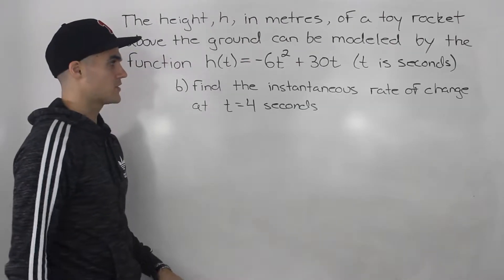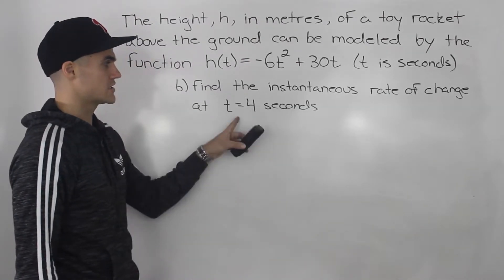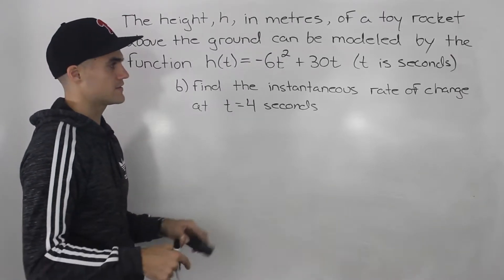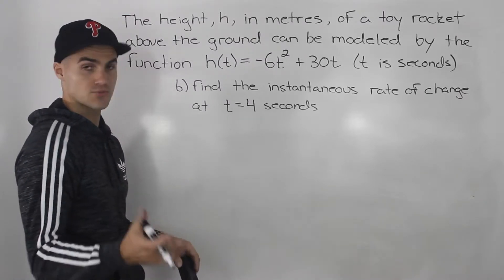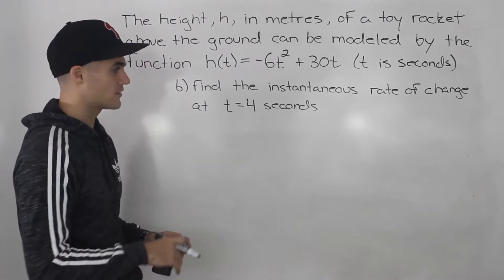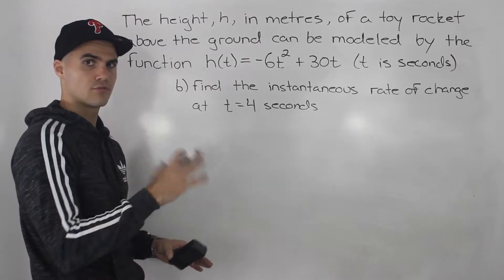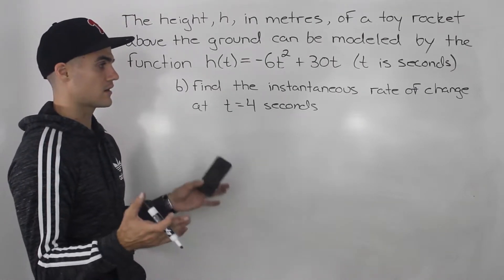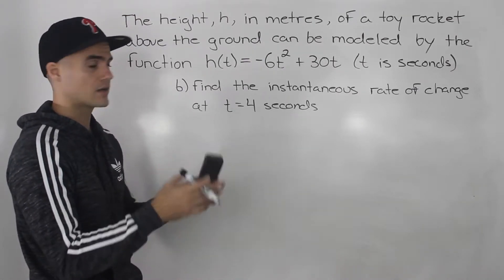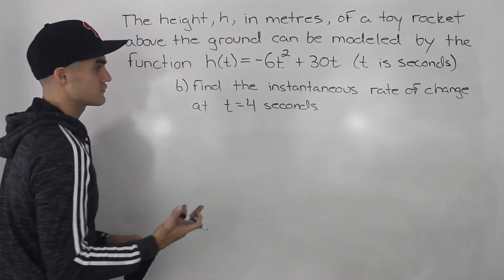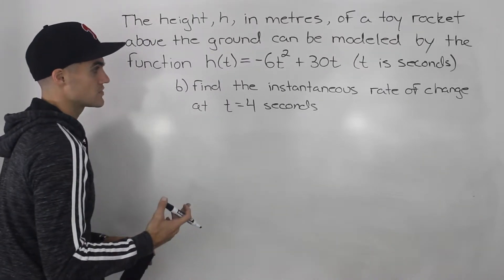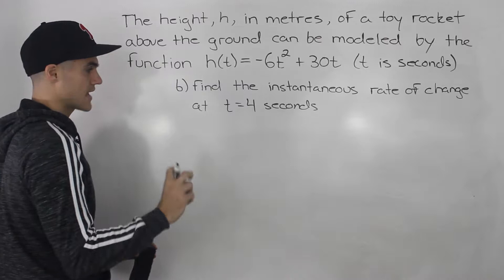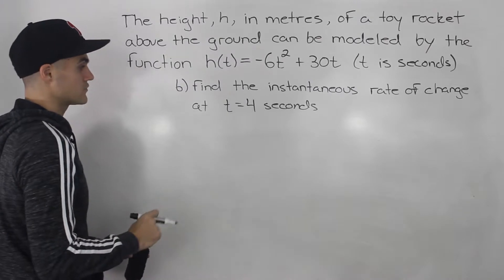Moving on to part B, we have to find the instantaneous rate of change at t equals four seconds. There are a bunch of different ways to find the instantaneous rate of change — we already covered those in the rate of change chapter: the following interval method, the preceding interval method, and the centered interval method. Let's use the difference quotient though, since it's the toughest one and it gives us the exact rate of change.